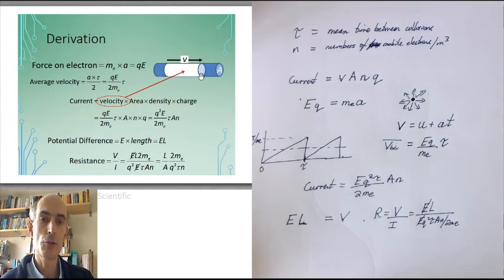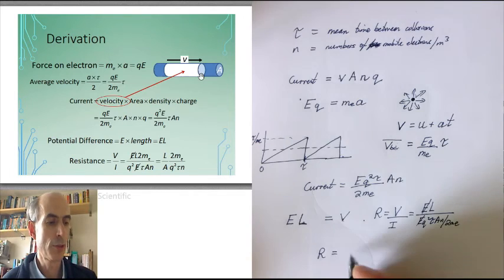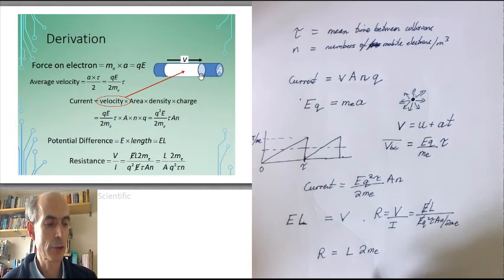The electric field cancels. That ends up with the formula R. The resistance is l times 2 times the mass of an electron, divided by the cross-sectional area A, the mean time between collisions, the number of mobile electrons per cubic meter, and the charge on an electron squared.